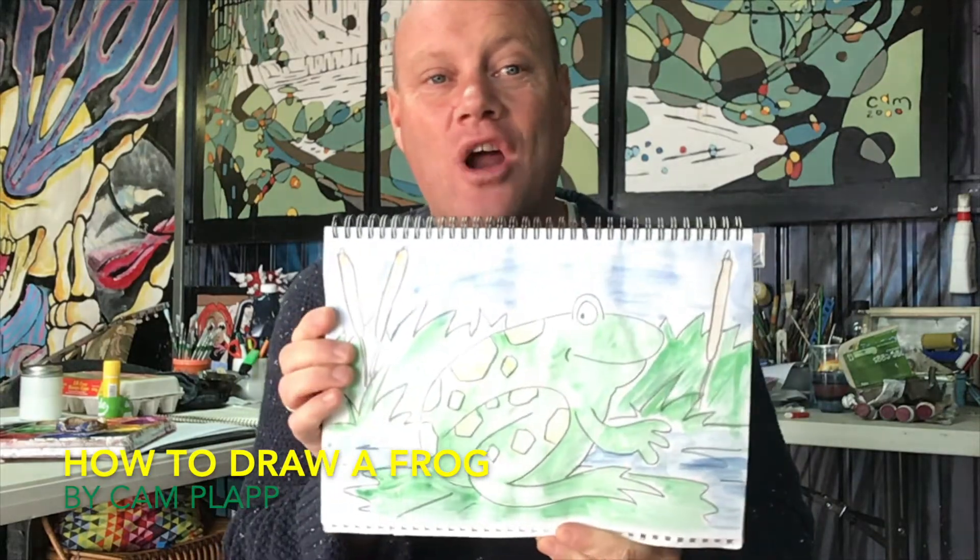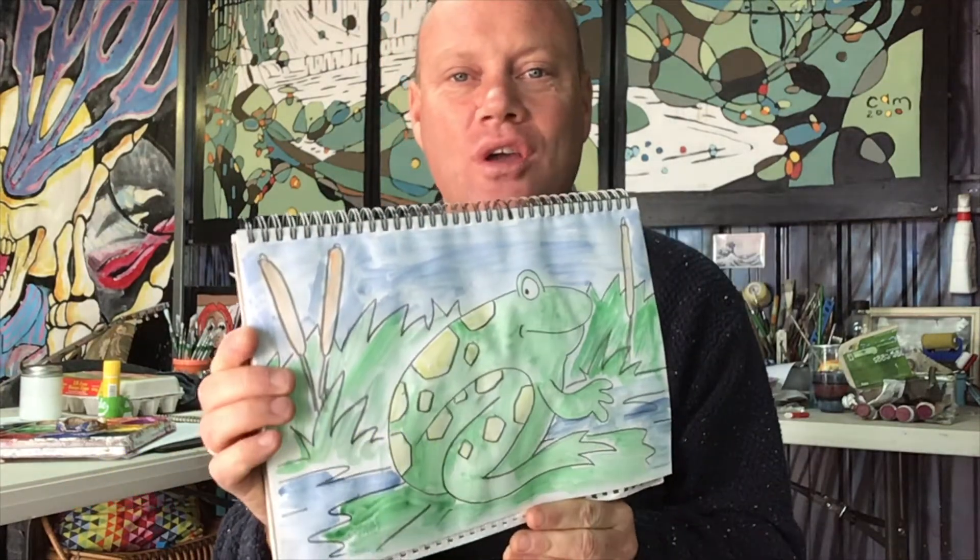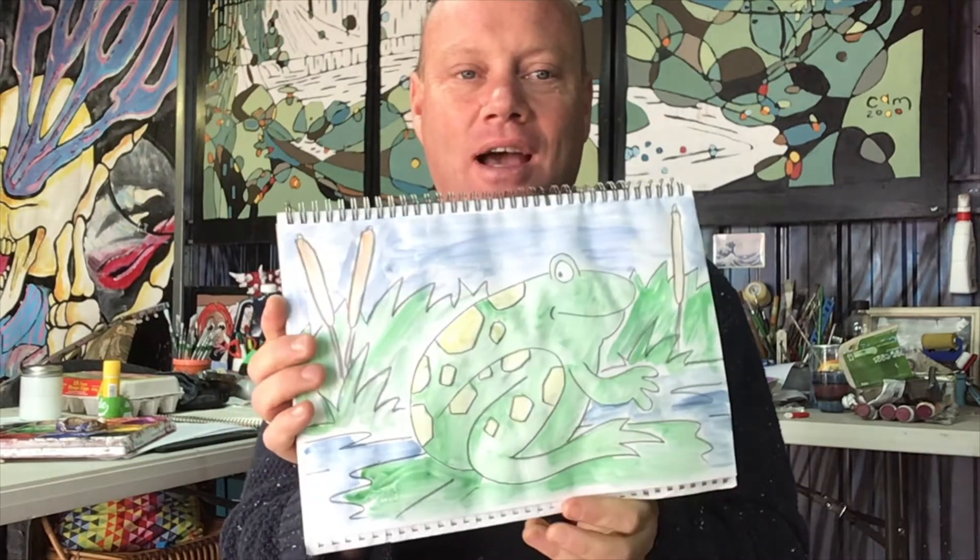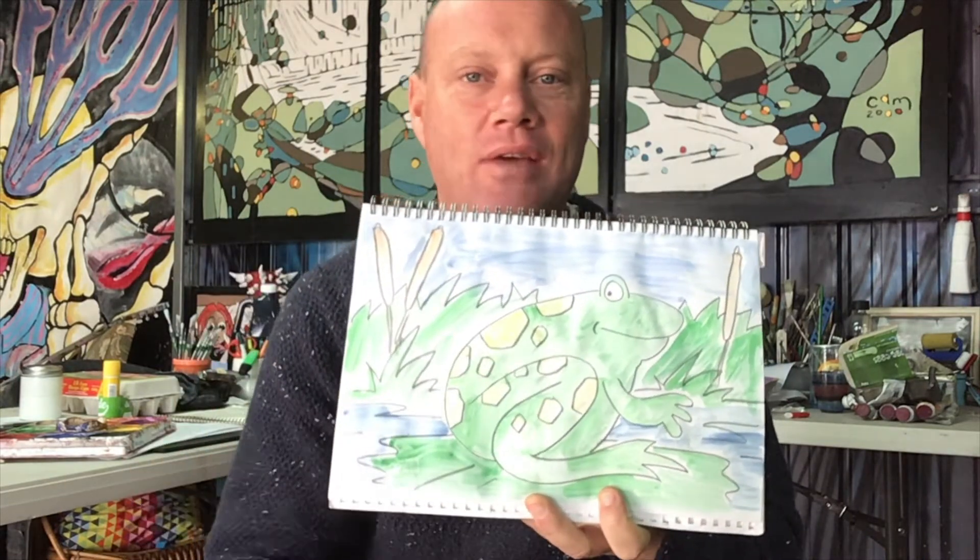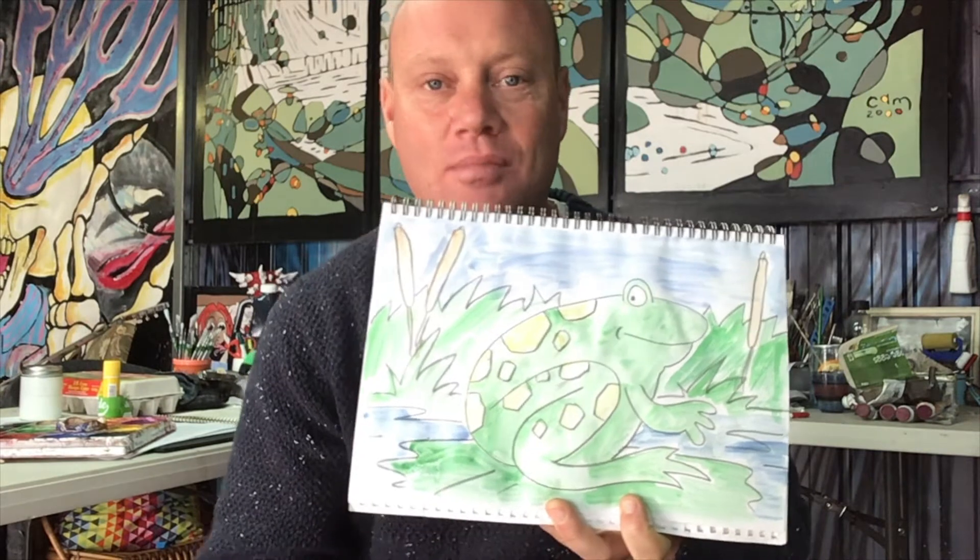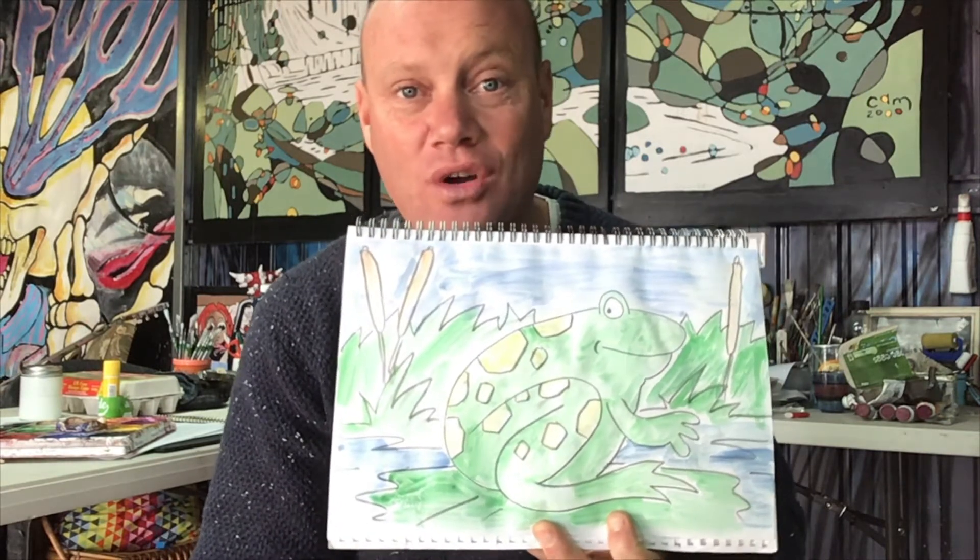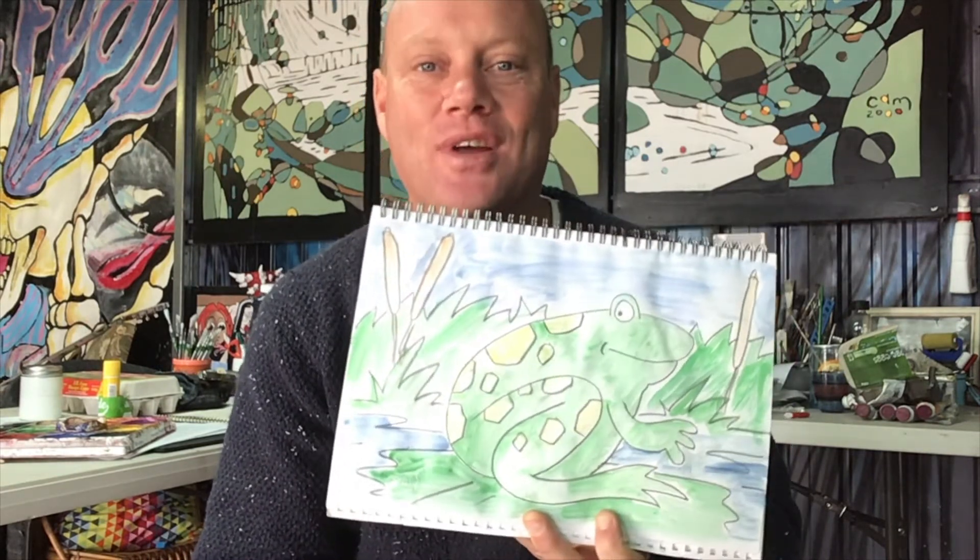Hey everyone, today I'm going to show you how to draw a really cool little picture of a frog sitting on a lily pad. You can give it any sort of colors you want, you can give it any background you want, but I'm going to show you how to do the frog, so let's get straight into it.